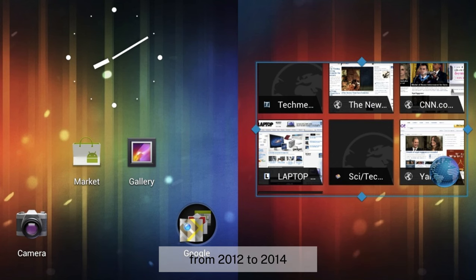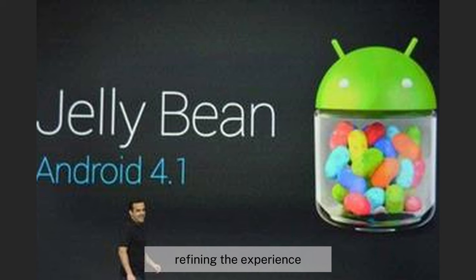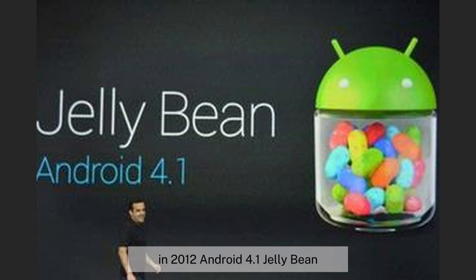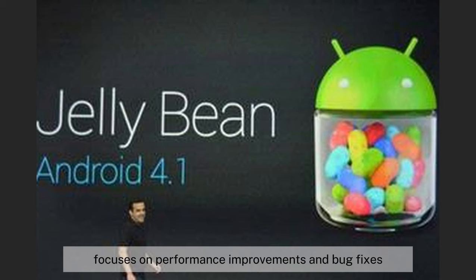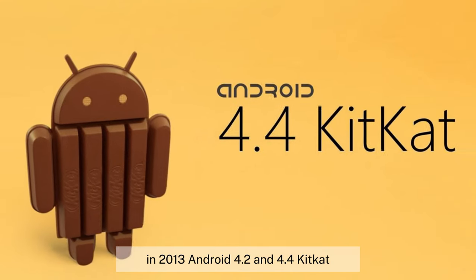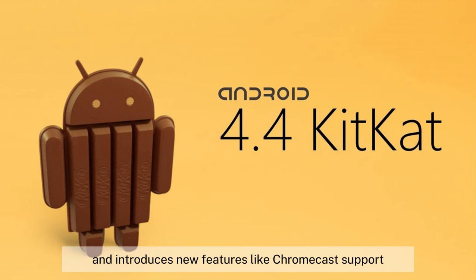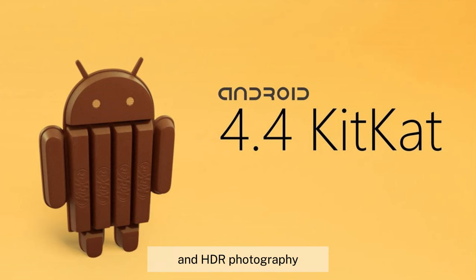From 2012 to 2014, the focus was on refining the experience. In 2012, Android 4.1 (Jelly Bean) focused on performance improvements and bug fixes. In 2013, Android 4.2 and 4.4 (KitKat) optimized the OS for low-end devices and introduced new features like Chromecast support and HDR photography.